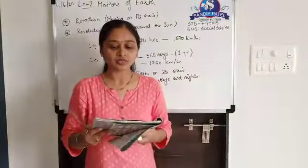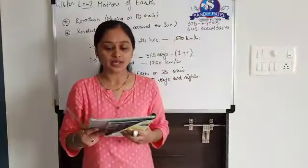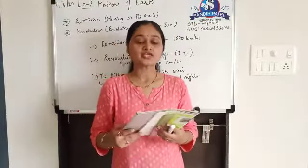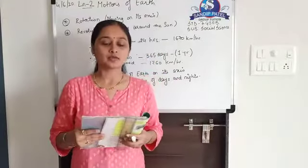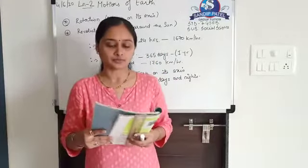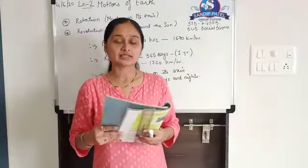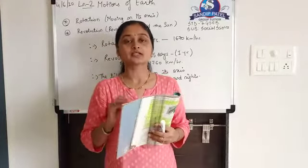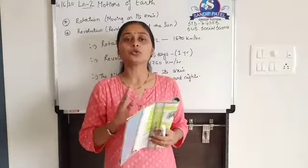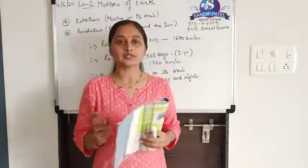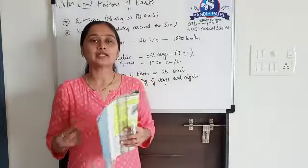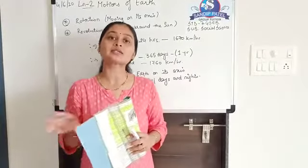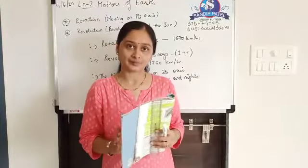Earth rotates on its own axis and also revolves around the sun. In this chapter, they have explained how earth's rotation happens and due to rotation we get variation in day and night. Earth's revolution causes different seasons. Rotation happens in how many hours, revolution happens in how many days, what is the speed of rotation, what is the speed of revolution.